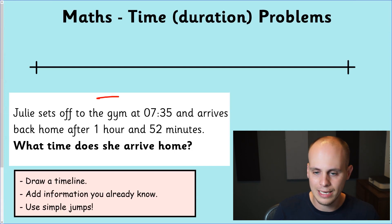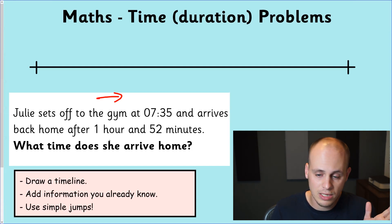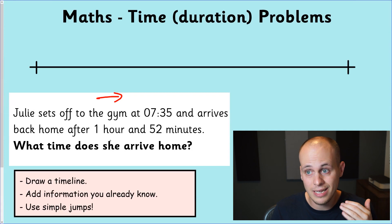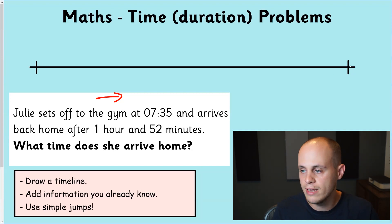Hopefully it's quite clear that we're working forwards in time. We've got when she left the gym, how long she was there, and now we want to know what time she gets back. Tip number one: do not use column addition or column subtraction. Sometimes it works if you're lucky depending on the numbers, but a lot of the time it doesn't work. What I do advise is drawing yourself a number line. It doesn't have to be super straight. That's my first thing: draw a timeline.